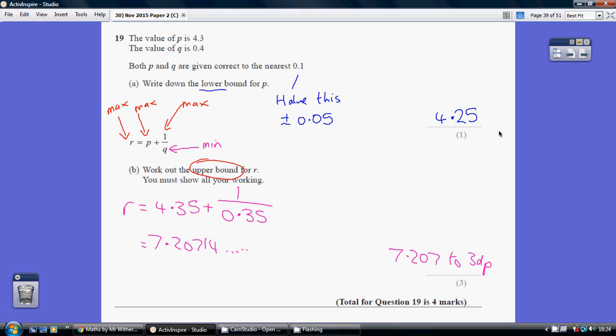That is the smallest real value that when you round it to one decimal place, to the nearest 0.1, we actually end up with 4.3.